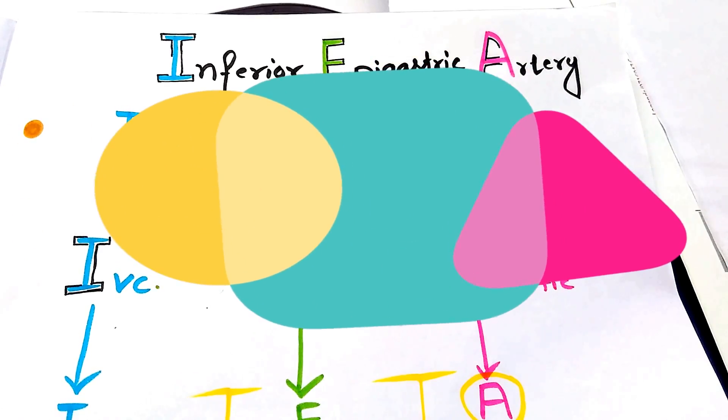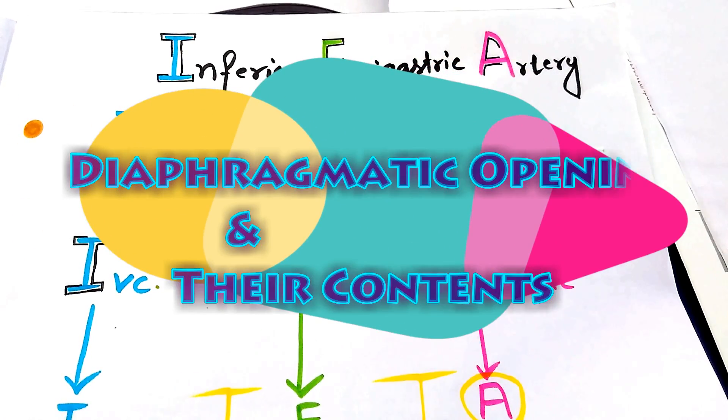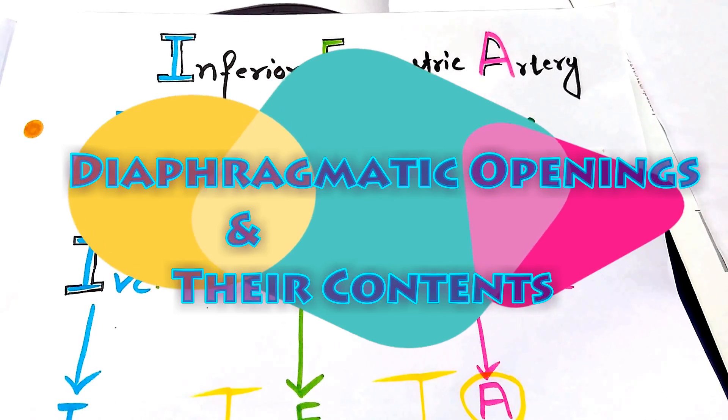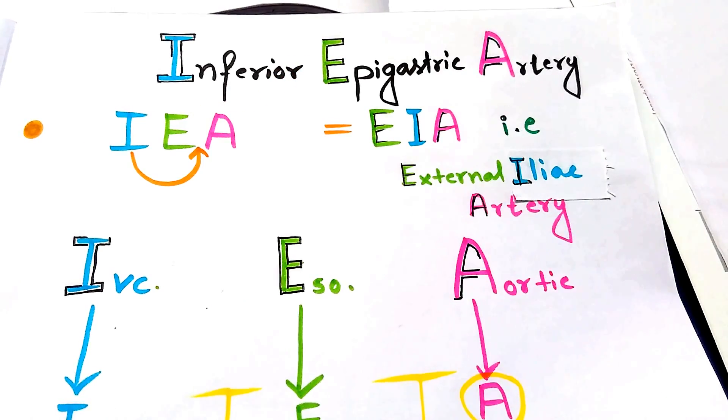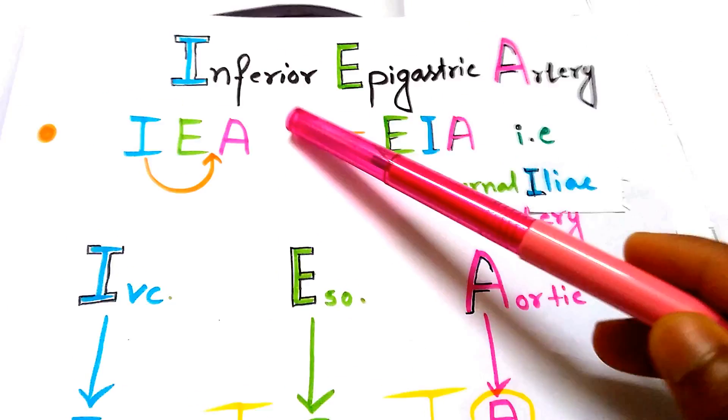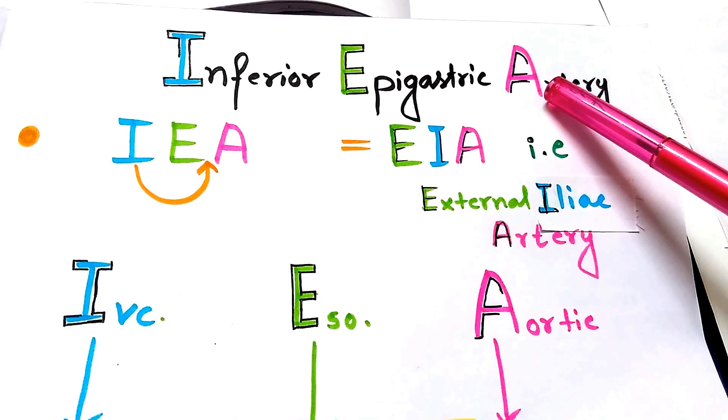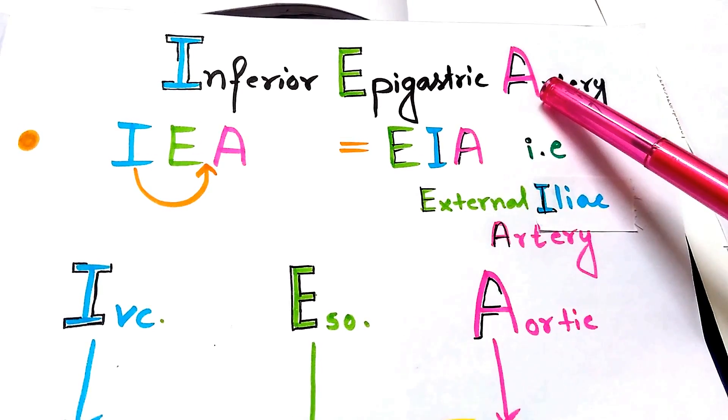Hello and welcome back friends. Today we have the mnemonic about the diaphragmatic openings and their contents. Our mnemonic is Inferior Epigastric Artery. The first question that comes to your mind is why I have taken inferior epigastric artery as a mnemonic.